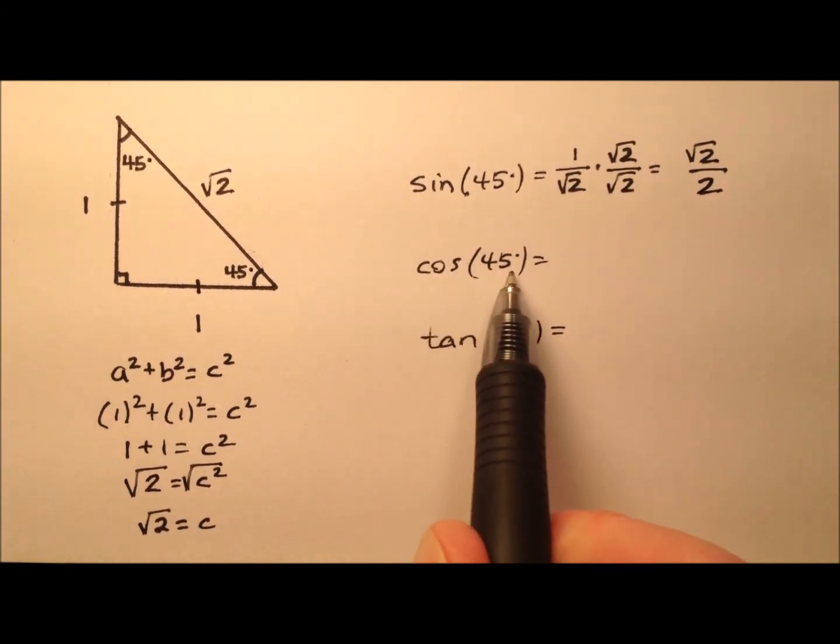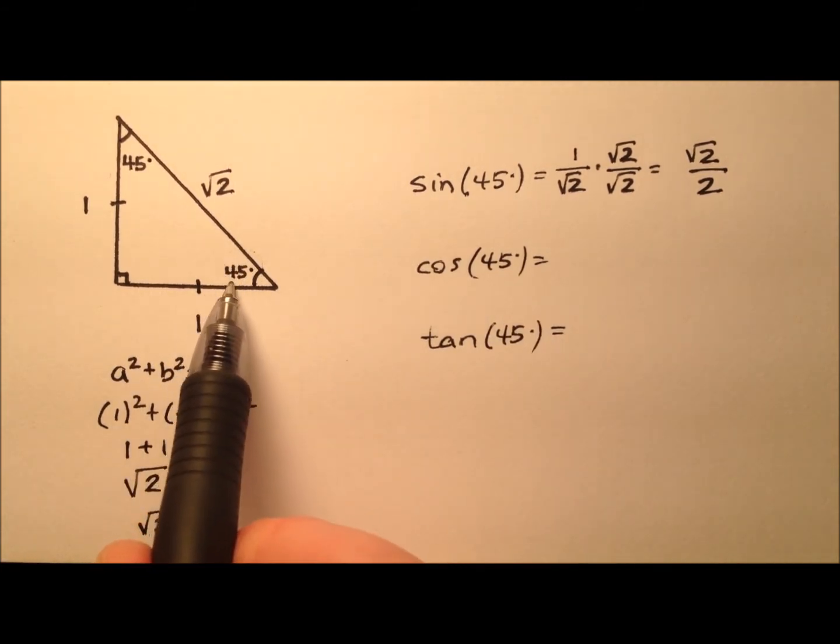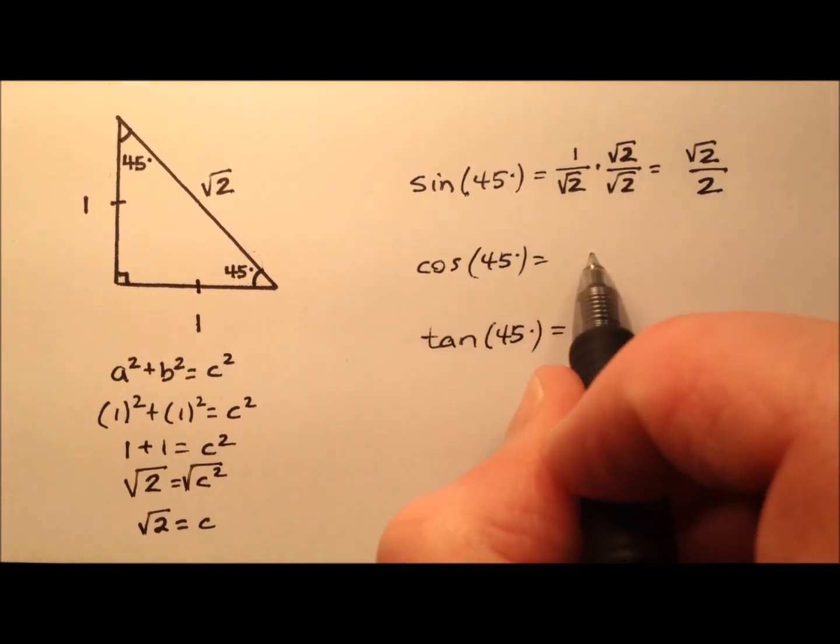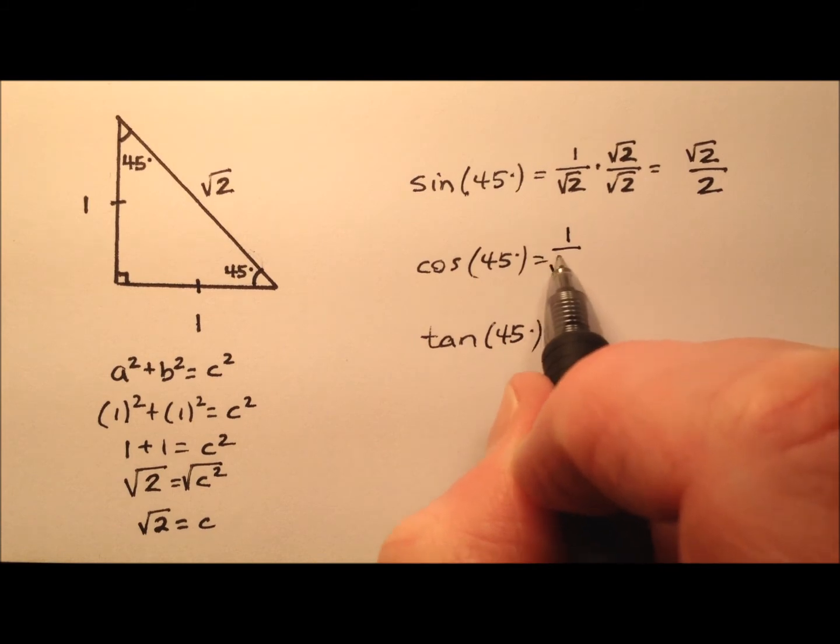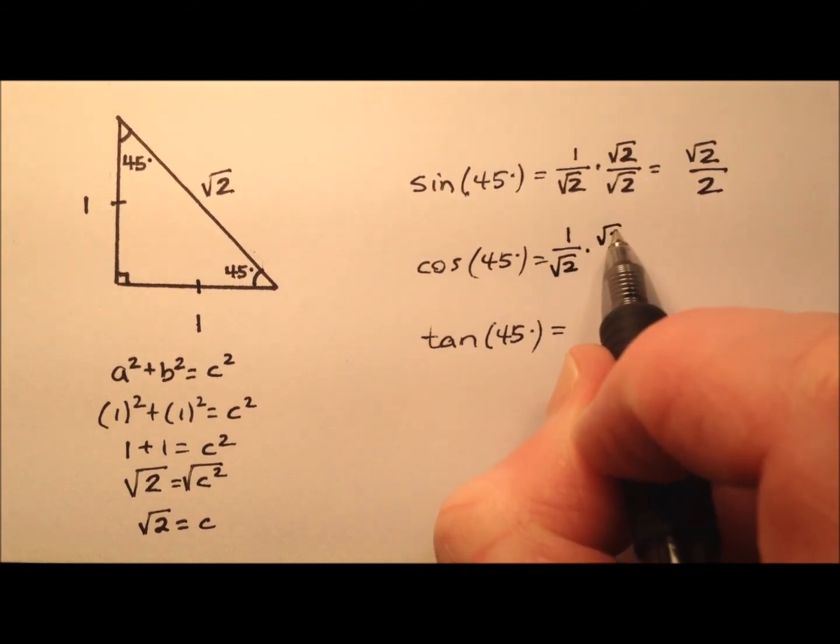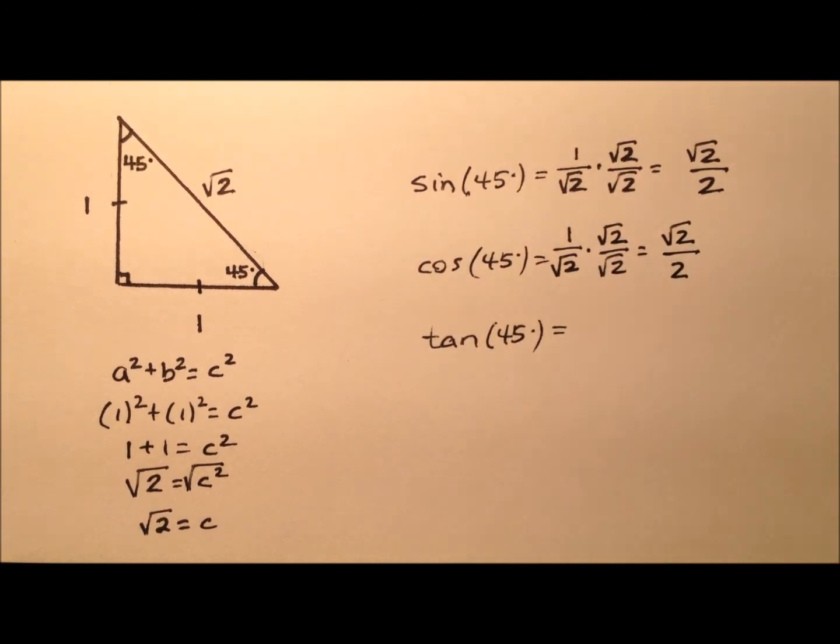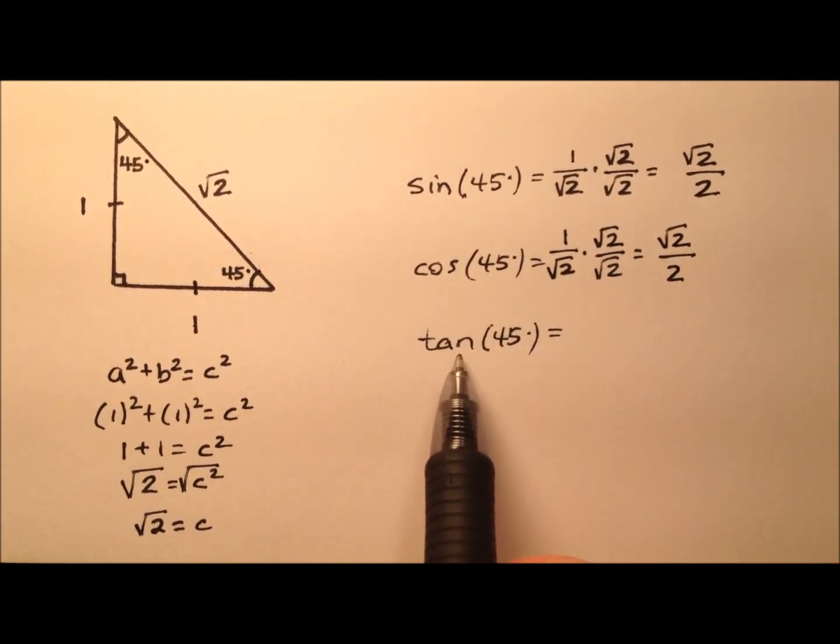Similarly, the cosine of 45 degrees will have a ratio that's adjacent over hypotenuse. If we go from this 45 degrees again, the adjacent side is also one, and the hypotenuse is still √2, so it looks like I actually have the same thing. So it'll be √2/2.